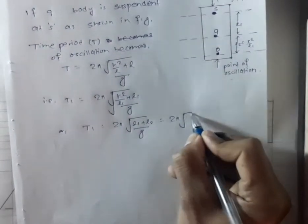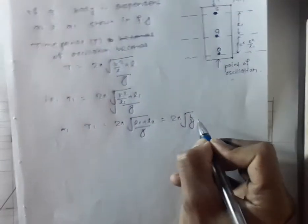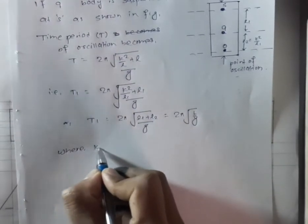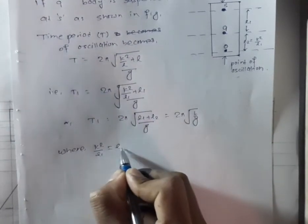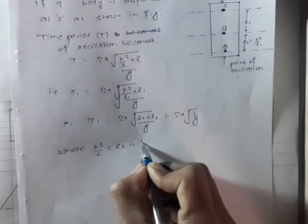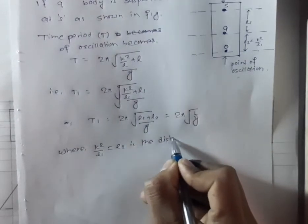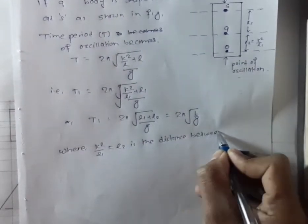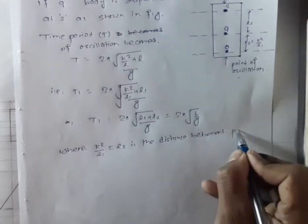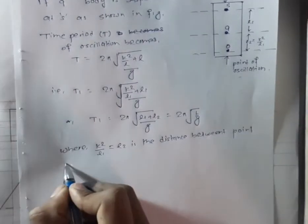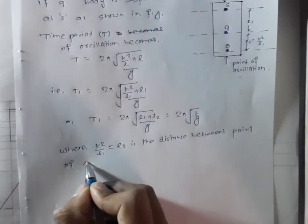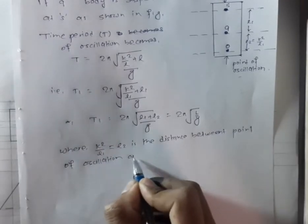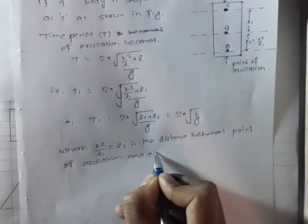T1 is equal to 2π root under (L1 + L2) upon G, which equals 2π root under L upon G. Here, k² upon L1 equals L2, which is the distance between the point of oscillation and the center of gravity.